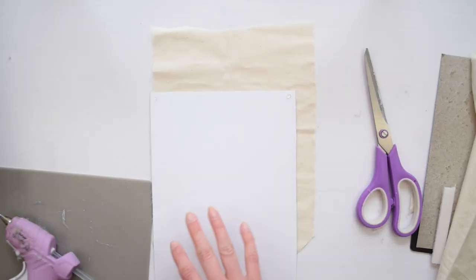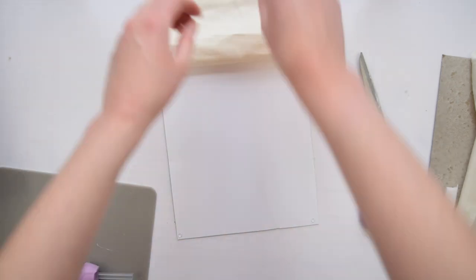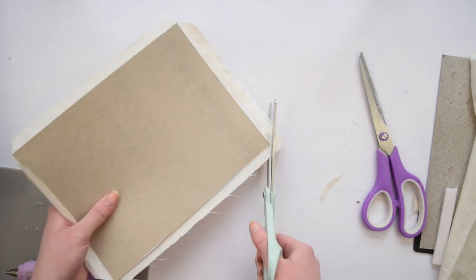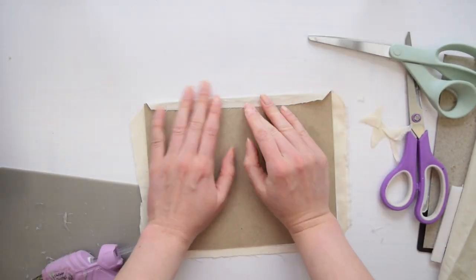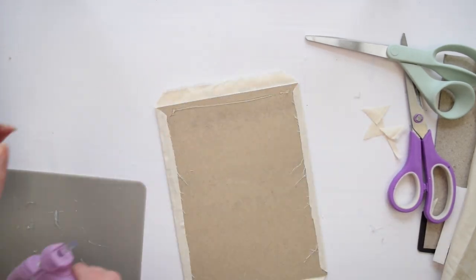Next I used the tiniest bit of hot glue on each of the corners of the paper here, flipped it over, and secured it down. Then I took my scissors and I snipped off each of the corners. That way it would be so much easier for this fabric to lay flat when I folded it over the edges.